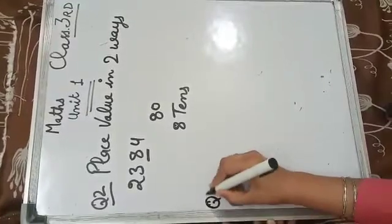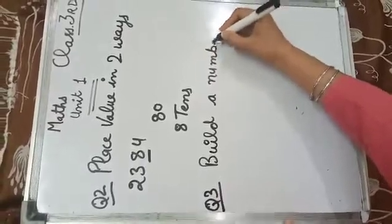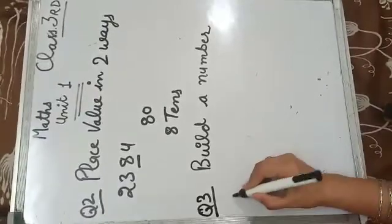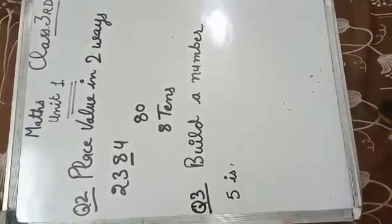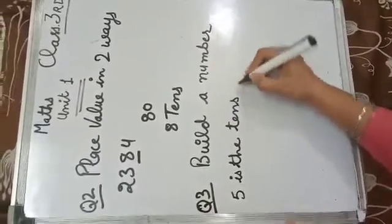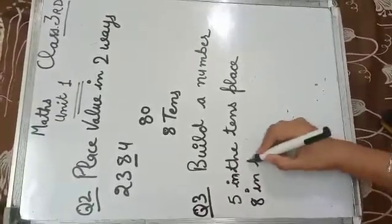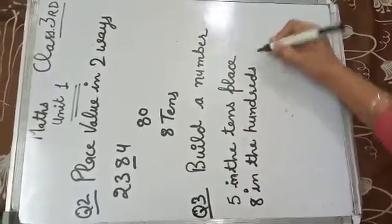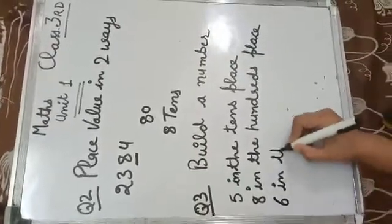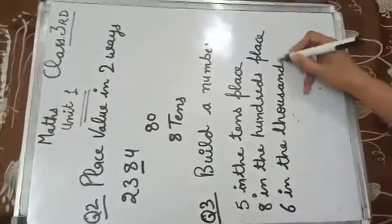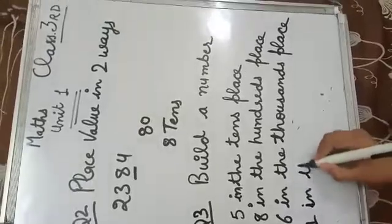Now question number 3: build a number. 5 is on the tens place. 8 is in the hundreds place. 6 is in the thousands place. And 1 is in the ones place.